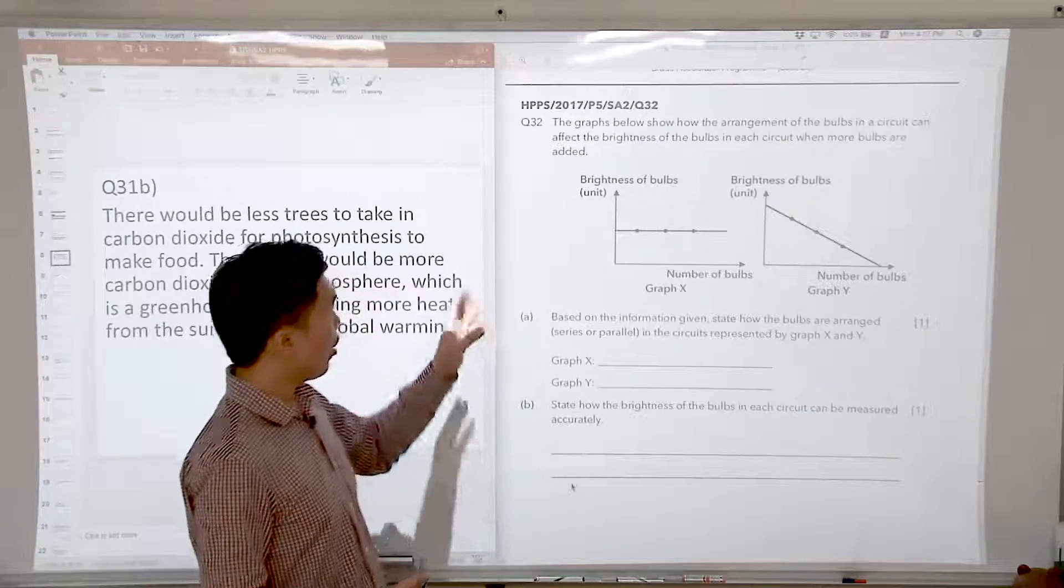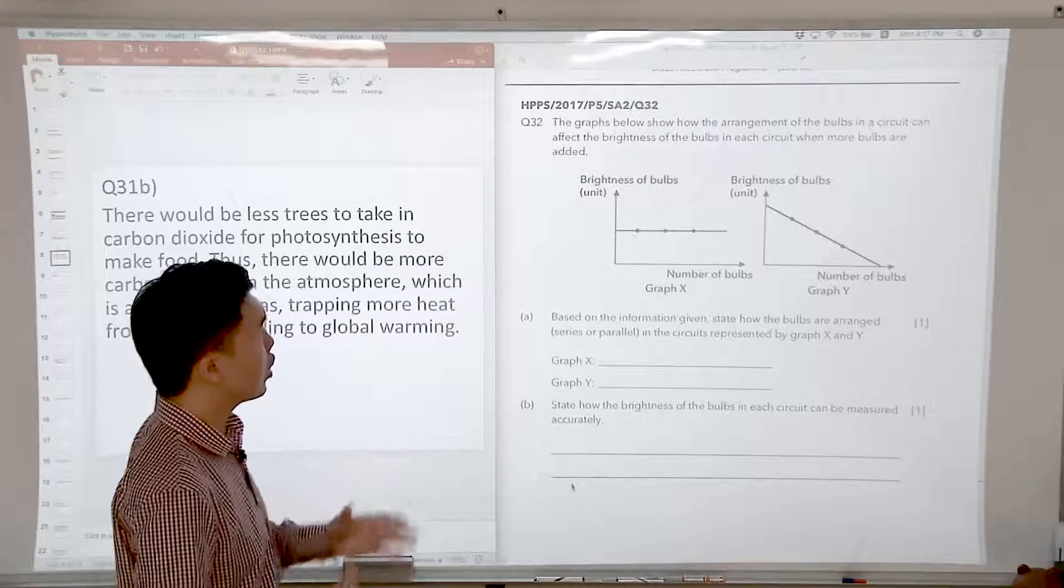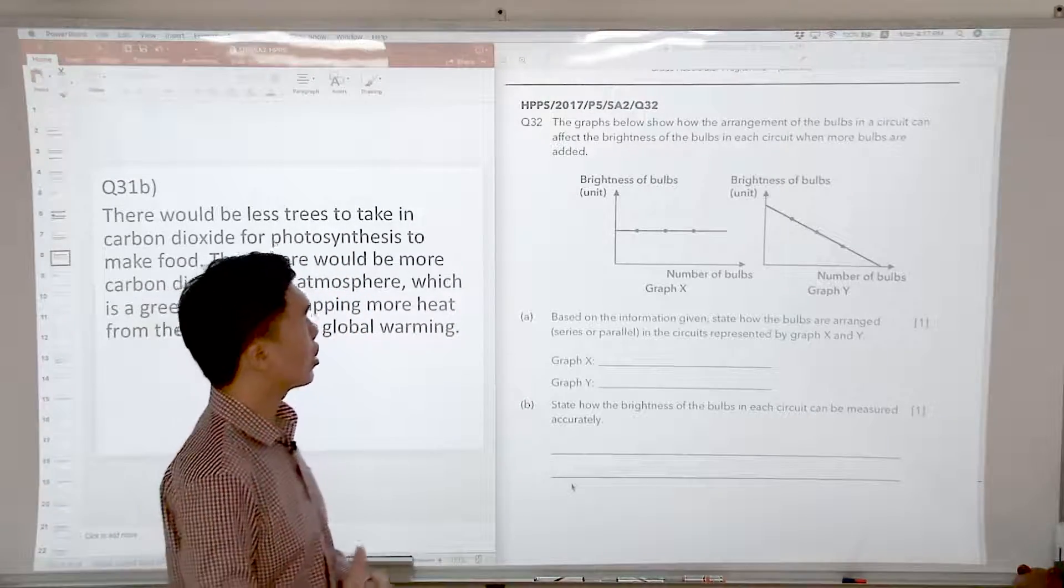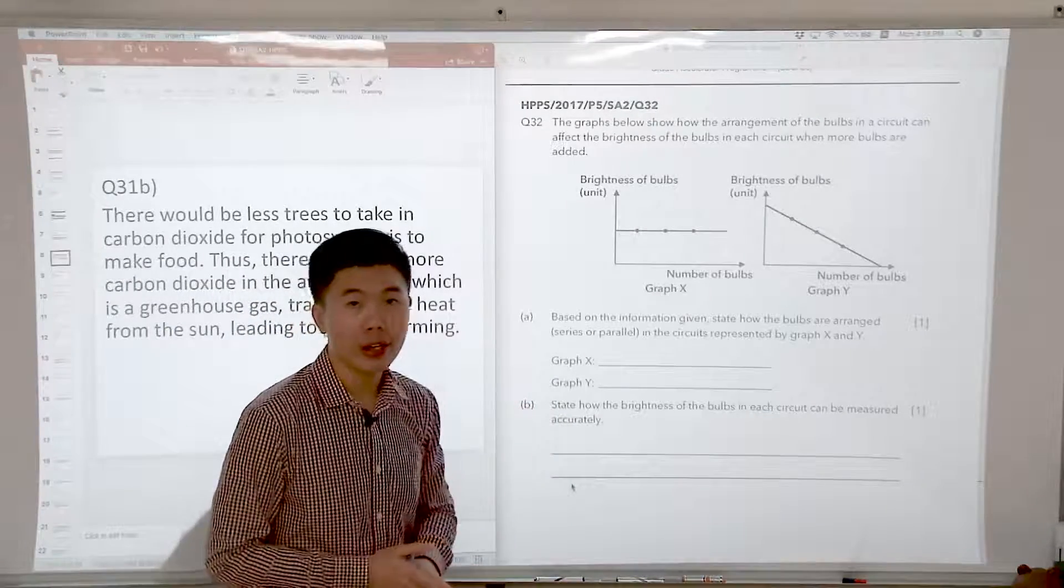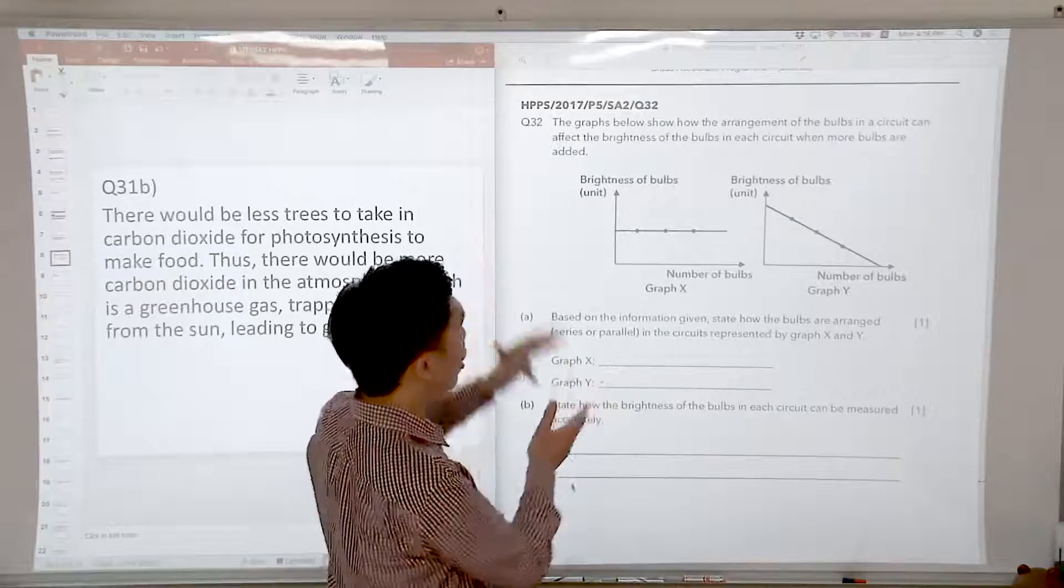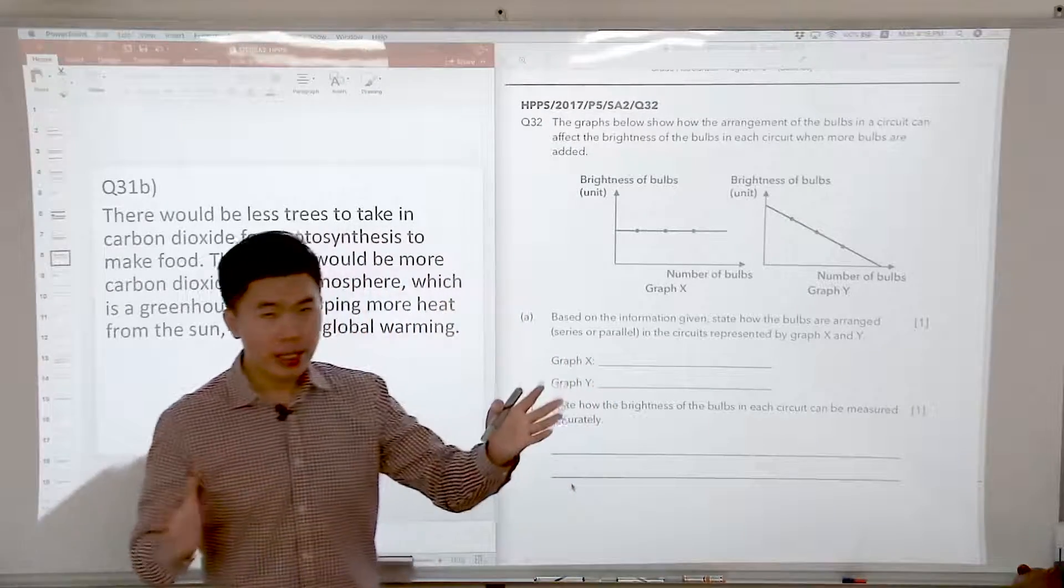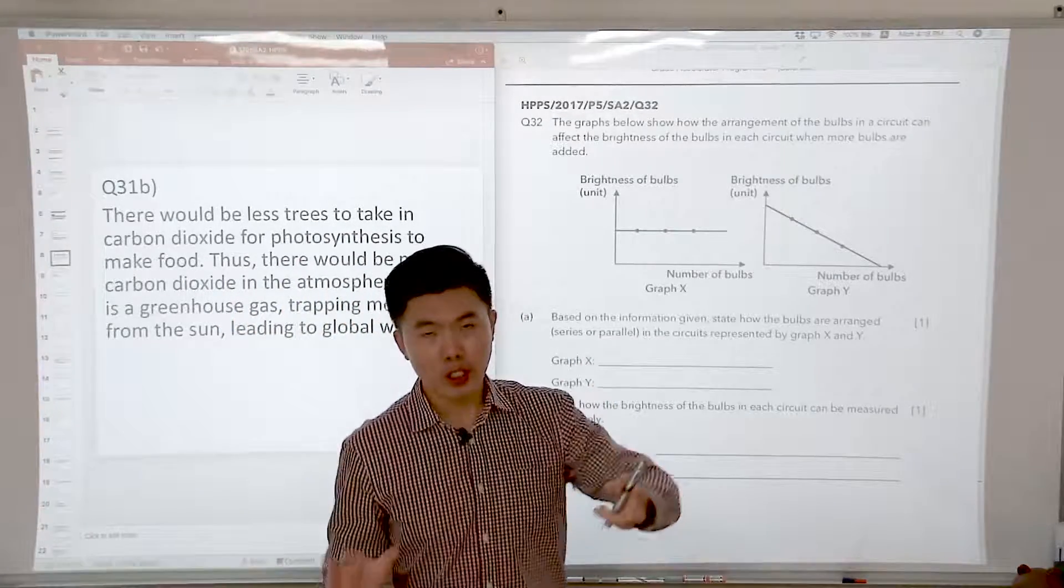Question 32. The graph below shows how the arrangement of the bulbs in a circuit can affect the brightness of the bulbs in each circuit when more bulbs are added. So the moment we have some data on the brightness of the bulbs, this leads me to recall the two concepts.